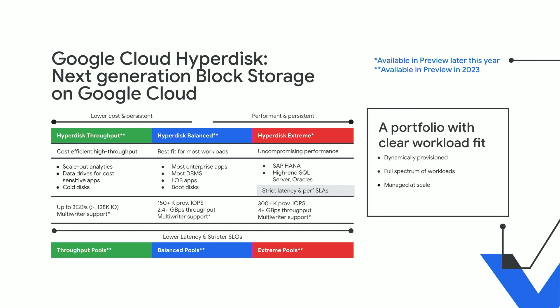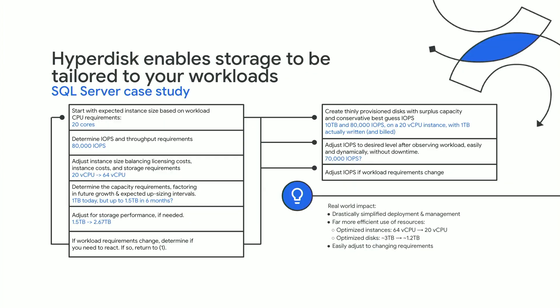Looking at SQL Server provisioning — today with Persistent Disk, there are many steps: different disk options with performance characteristics, VM sizing, and licensing implications tied to vCPUs. If requirements change over time, you have to re-provision performance and persistent disk, causing complications. With HyperDisk, it's dramatically simplified: you have three knobs — IOPS, throughput, and capacity — to provision exactly what you need on day one and size the VM to application needs, not storage needs. Additionally, after month six or twelve you can dynamically change those performance characteristics as needed.